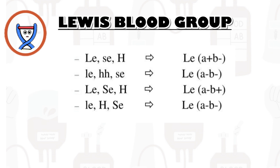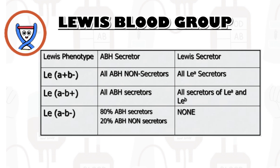Le(H, se) produces the Le(a+b−) phenotype — because SE is recessive, Le-a is not converted to Le-b. Le(HH, SE) produces Le(a−b−). Le(SE, H) — where all genes are dominant — produces Le(a−b+), meaning all Le-a is converted to Le-b. Le(se, H, SE) gives Le(a−b−). All Le(a−b+) individuals are ABH secretors and also secrete Le-a and Le-b, but very little Le-a will be detected in plasma or on RBCs.